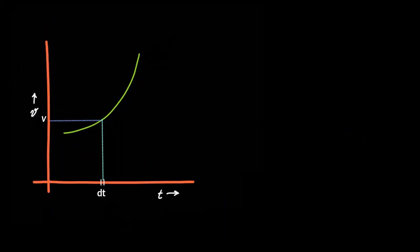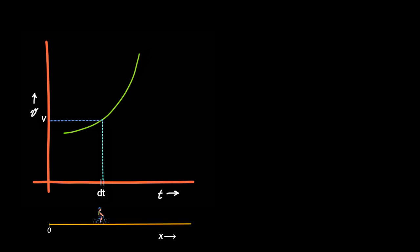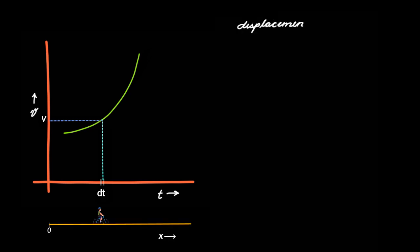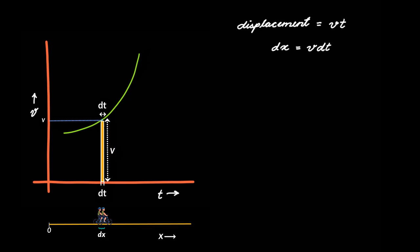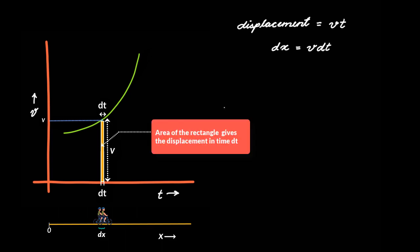So the displacement in time dt can be given by the usual equation — displacement is equal to velocity into time, or here displacement dx is equal to v times dt. You will observe that v times dt is nothing but the area of this rectangle that has width dt and height v. So we can say that in a velocity-time graph, the area of a rectangle with width dt and height v gives the displacement of a particle in time dt.